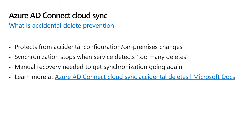In order to enable this feature, you will have to configure an accidental delete prevention threshold value. If the number of deletes ever exceeds this threshold value, synchronization automatically stops and your job is put into quarantine. In addition, you can configure a notification email address, wherein a notification will be sent to this email address whenever the synchronization job is stopped.